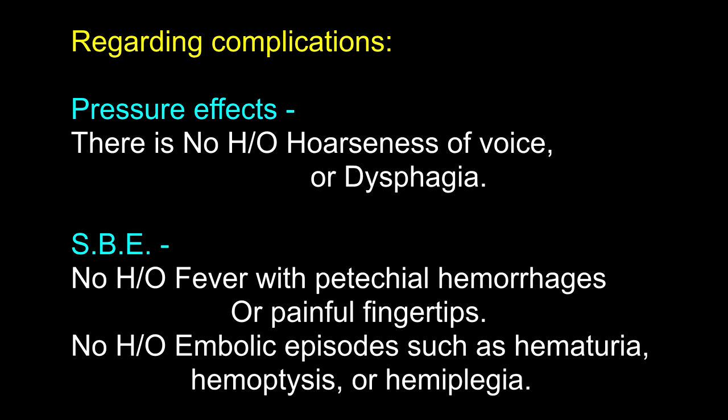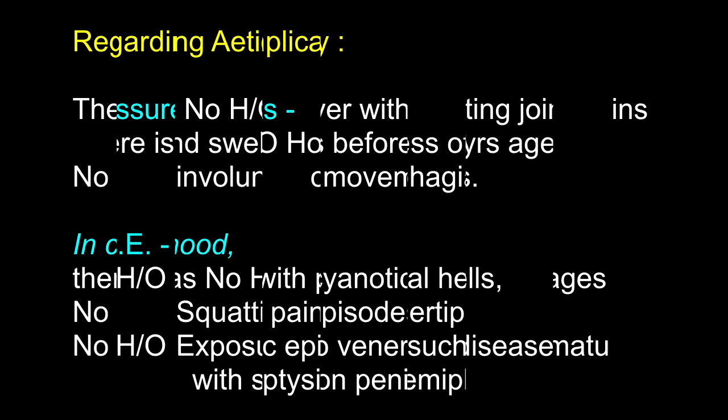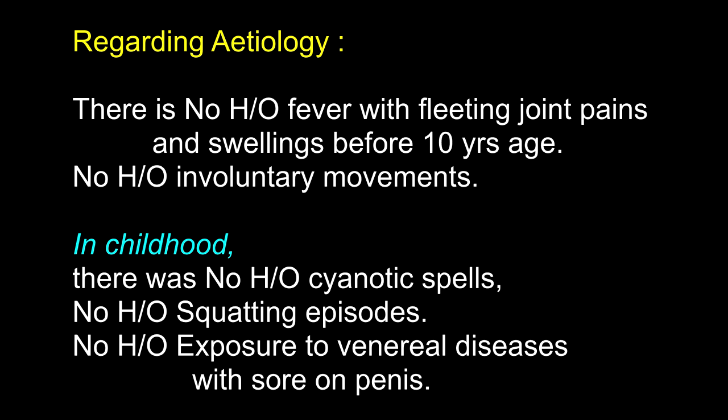No history of long-standing fever with petechial hemorrhages or painful fingertips. No history of embolic episodes such as hematuria, hemoptysis, or hemiplegia — asked for symptoms of infective endocarditis. Regarding etiology, there is history of fever with fleeting joint pains and swellings at age 10. No history of involuntary movements. History of fever with joint pains before the onset of cardiac symptoms strongly points to rheumatic fever as the cause of the lesion.